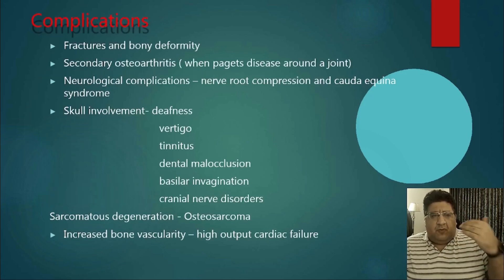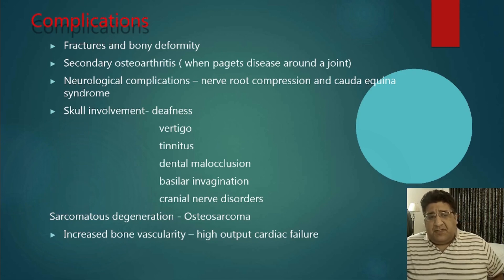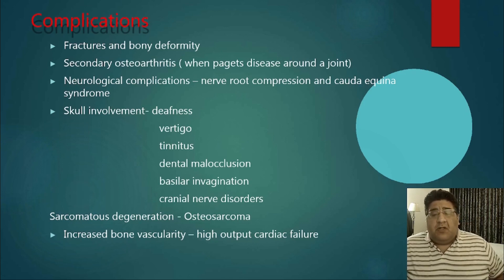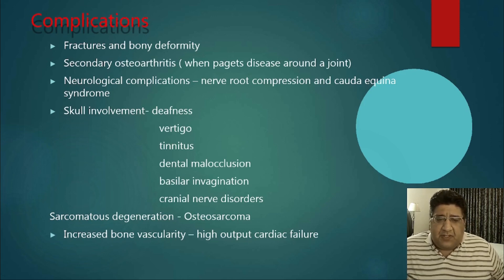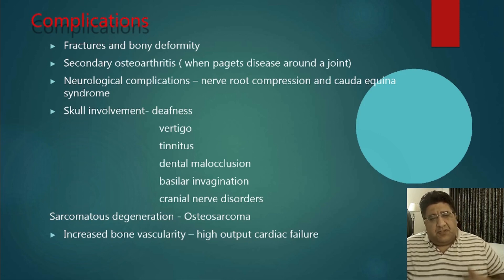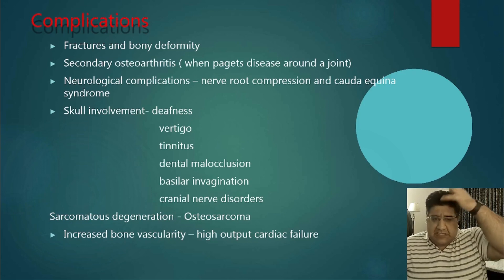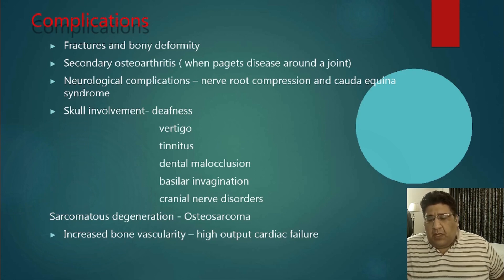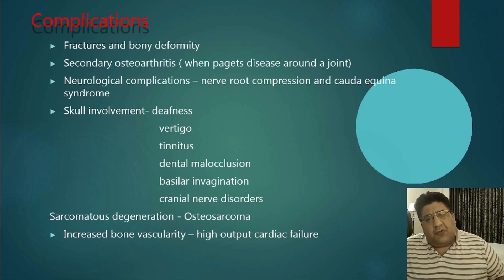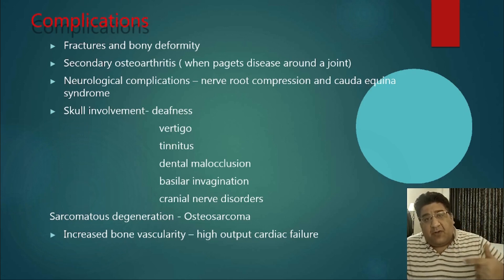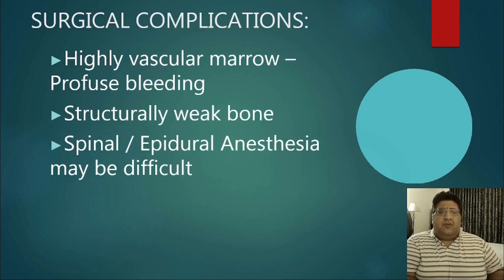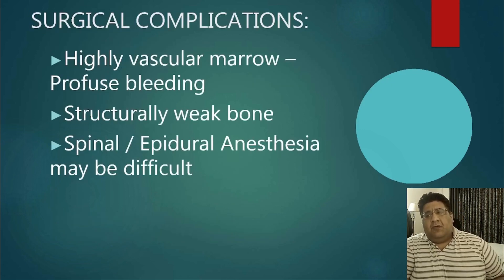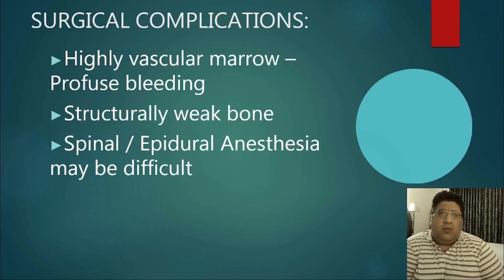Complications include deformities, thickenings, fractures, arthritis, and nerve compression — particularly in the plastic phase when excess bone formation causes nerve root compression and cauda equina compression. Skull issues are very common. Secondary osteosarcoma has already been mentioned. High output cardiac failure is also noted because of increased vascularity — too much vascularity places a load the heart cannot handle.